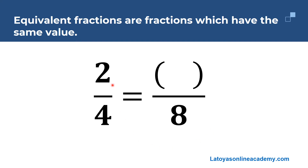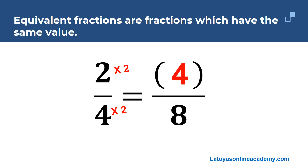Here we have two quarters is equal to something over eight. I'm going from a small denominator to a big denominator. What can I do to four to give me eight? I can multiply four by two to give me eight. The same thing I do with my denominator, I have to do with my numerator. So two twos are four.